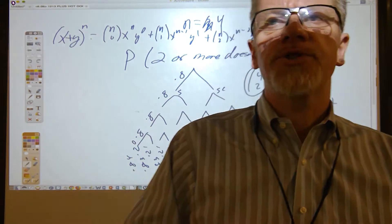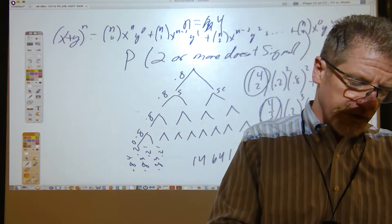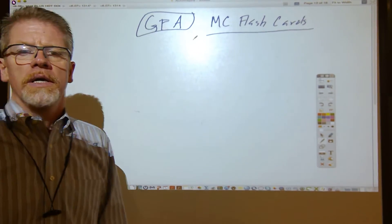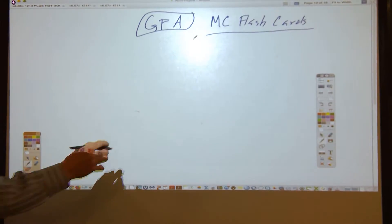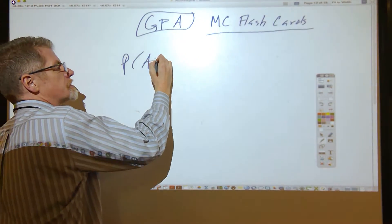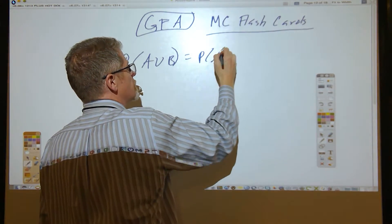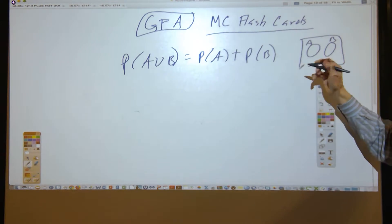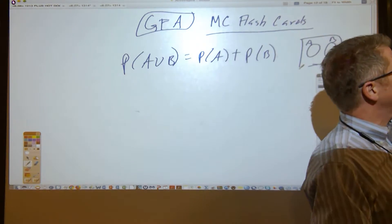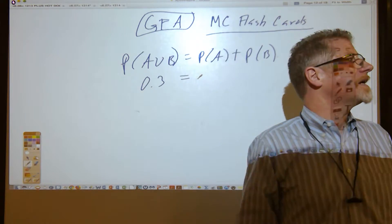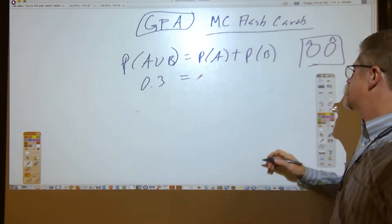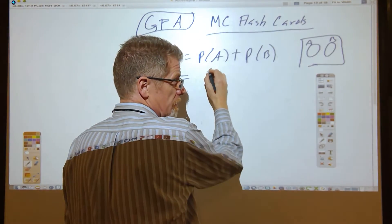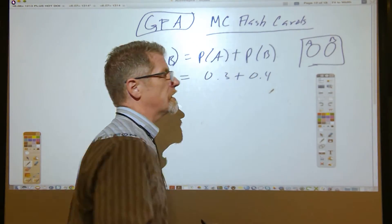Ladies and gentlemen, here we go — the last GFA problem for this contest. Let's talk about this one. The mutually exclusive case is the least complicated: P(A ∪ B) = P(A) + P(B) when there's no overlap. We're given the union is 0.7, and P(A) = 0.3, so P(B) must be 0.4 in the mutually exclusive case. The answer has to be either A or B since clearly P(B) = 0.4 under mutual exclusivity.